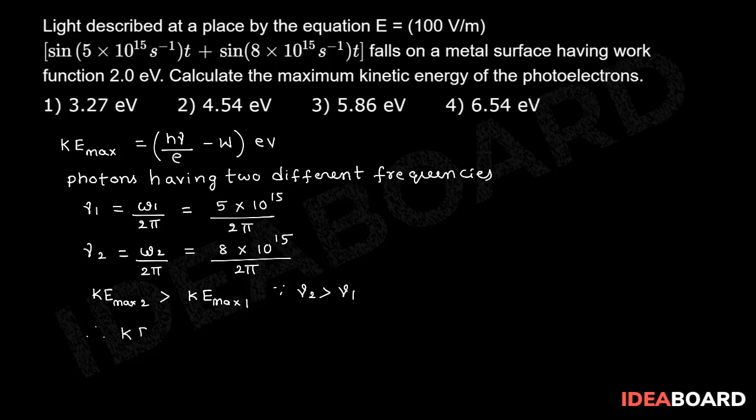So therefore, let us write. KE maximum 2 is equal to h nu 2 by e minus W. This is in electron volt.